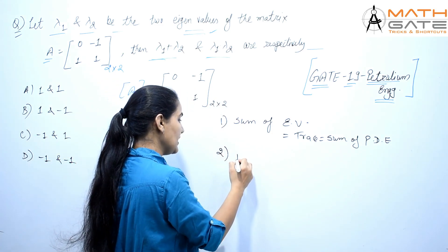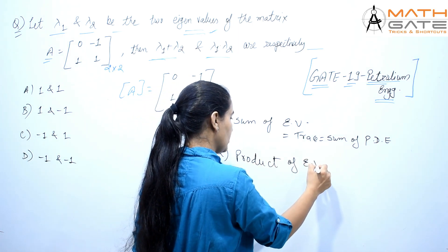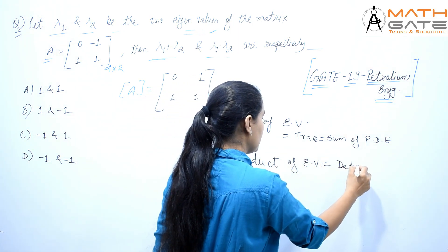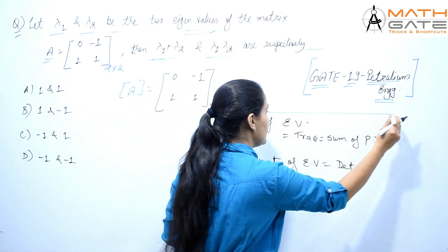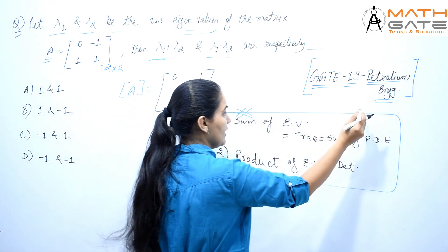And second thing is: product of eigenvalues is equal to determinant. These are the basic or key rules of eigenvalues and eigenvectors.